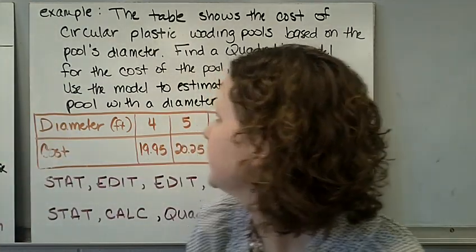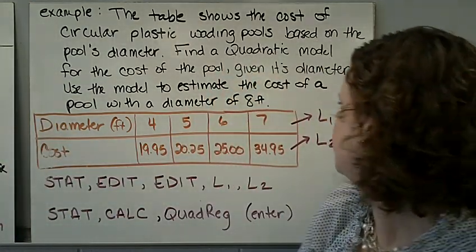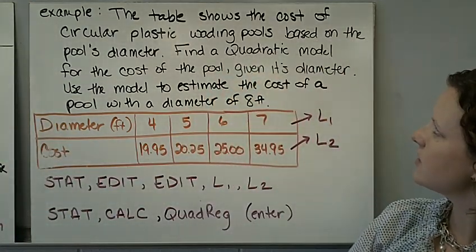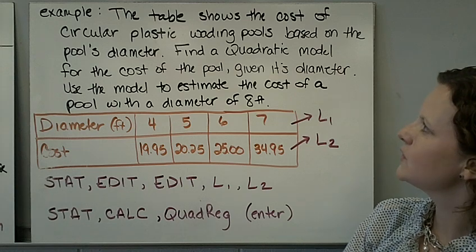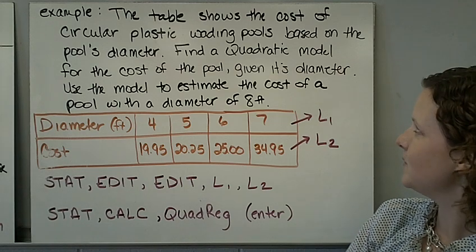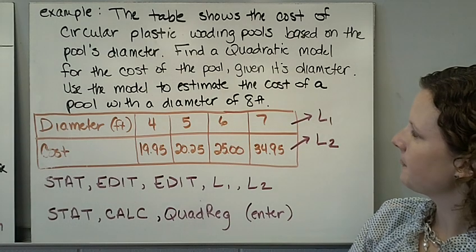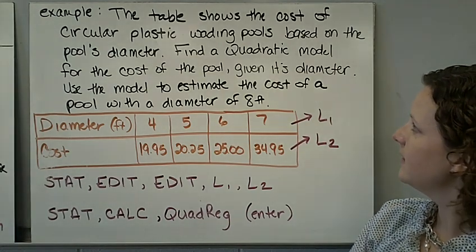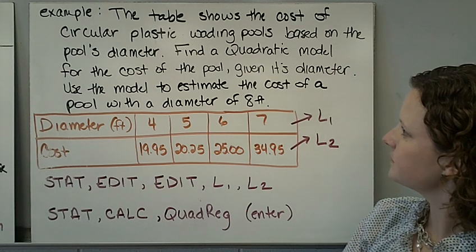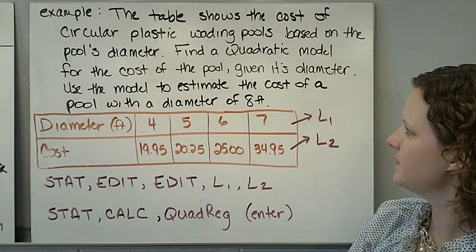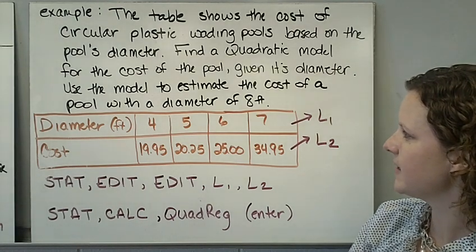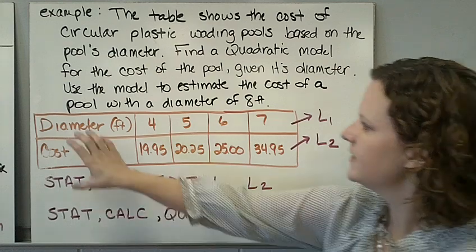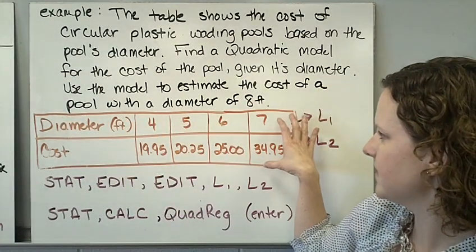Our first example - the table shows the cost of circular plastic wading pools based on the pool's diameter. Find a quadratic model for the cost of the pool given its diameter. Use the model to estimate the cost of a pool with a diameter of 8 feet.